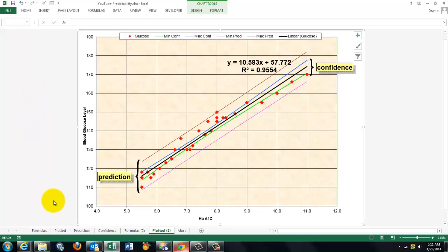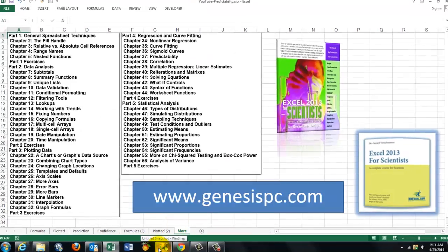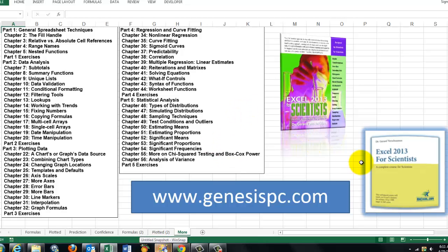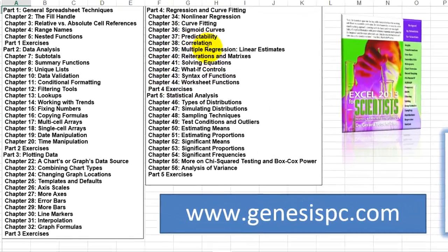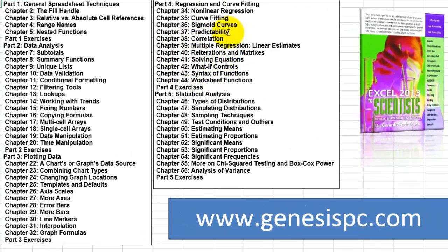If you want to know much more about statistics, and you should if you want to work with all of this—this is a very simple explanation—then I would go for my book Excel 2013 for Scientists, or the CD-ROM 2013 for Scientists. It has this range of issues, and one of them is regression analysis and curve fitting. And there is the predictability one that we discussed here, and there is a lot on statistical analysis, how do you plot data, how do you do data analysis in Excel, and some general spreadsheet techniques. You can find these two tools at genesispc.com, and that will take you further into Excel.